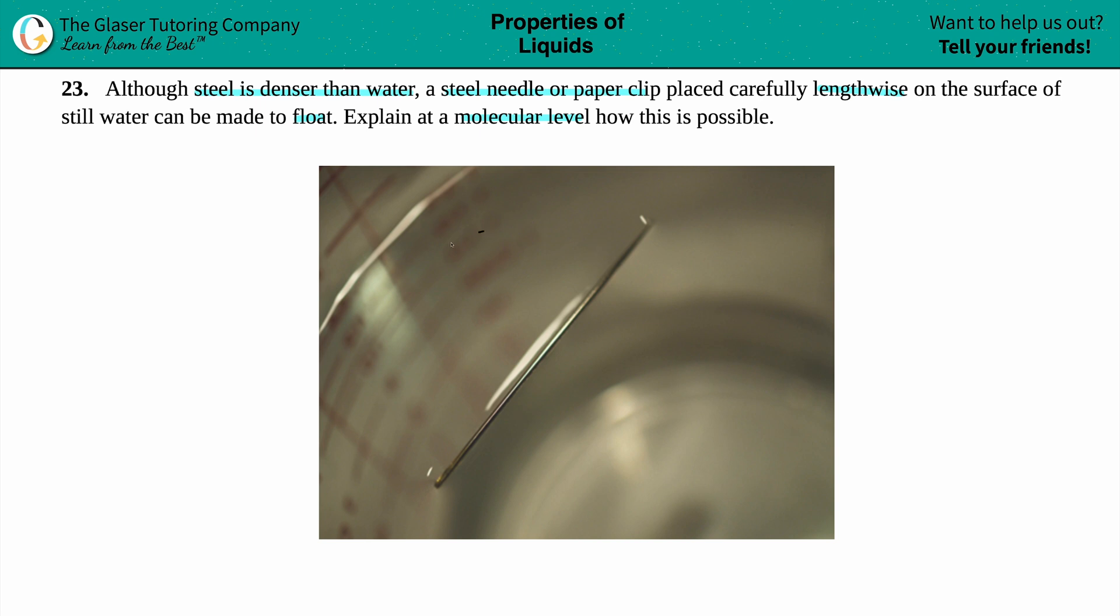And then we have this lovely picture over here. So what this picture is depicting is you have water in a measuring cup. I see that we're talking about a Pyrex measuring cup because I see these red symbols that's usually in a measuring cup like if you're cooking or something. And here on top is that steel needle. And as you can see, the steel needle is on top of all of this water.